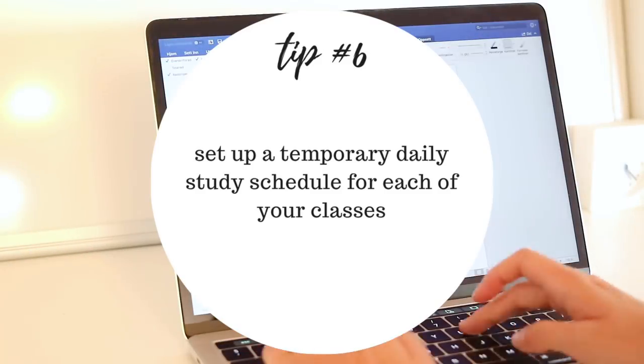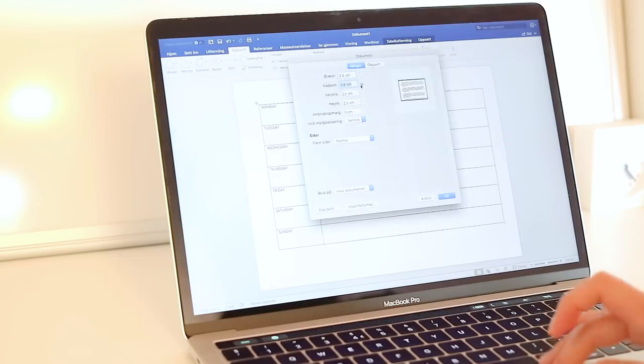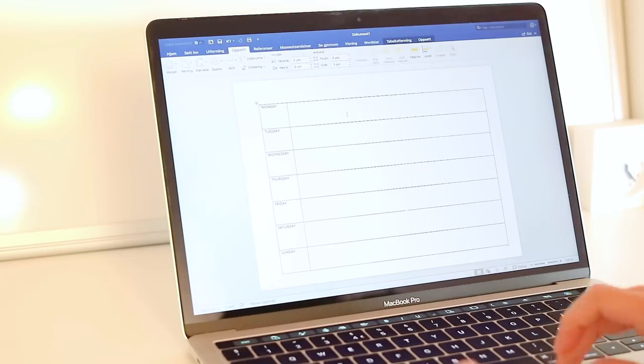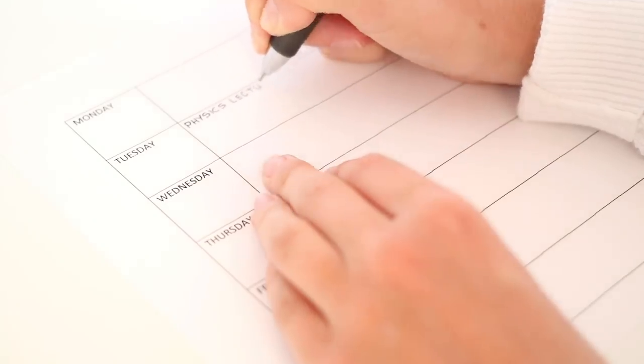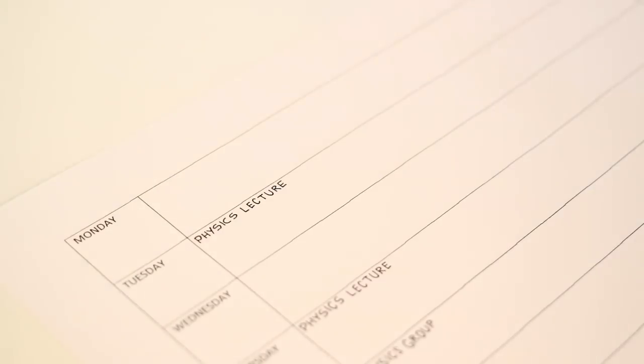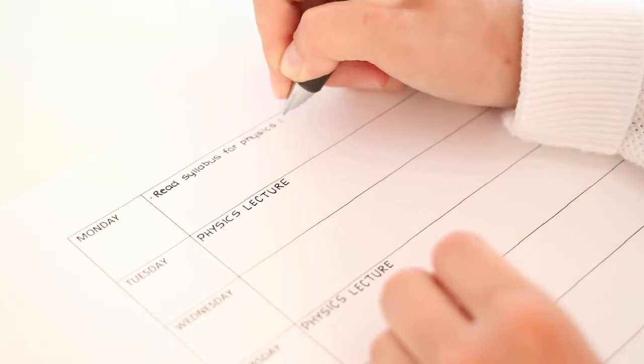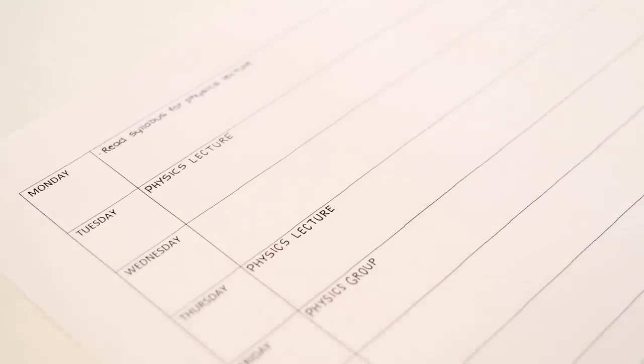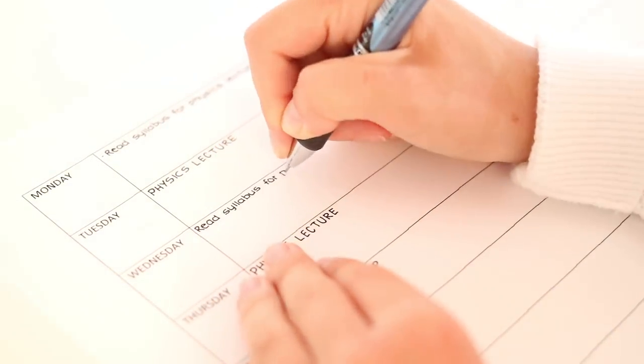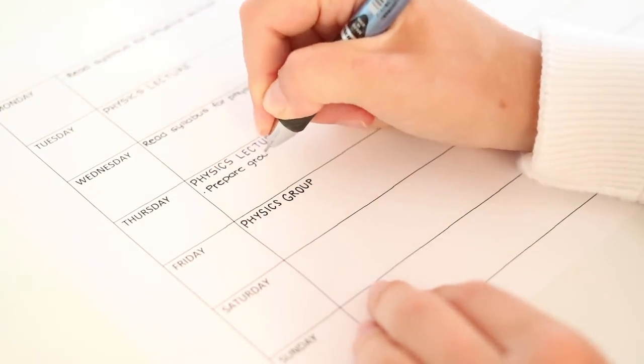Next is a tip that can be very helpful at the start of a new semester, and that is to set up a temporary study schedule for each of your classes. For example, let's say that you'll be taking a physics class that has lectures on Tuesdays and Thursdays, as well as a discussion group on Fridays. Then it will be wise to allocate some time on Tuesday and Thursday to review lecture notes, PowerPoints, and such, but also to take some time on Mondays and Wednesdays to quickly read through the syllabus for the upcoming lectures.